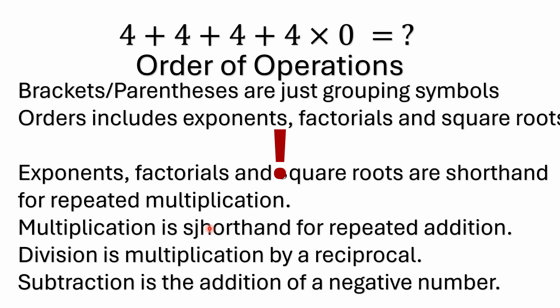Brackets or parentheses around multiplication or division are really redundant because multiplication already has precedence over addition and subtraction. Multiplication is shorthand for repeated addition. And the reason multiplication and division have equal precedence is because division is multiplication by a reciprocal — it's the same thing. For example, 10 divided by 5 equals 2, or 10 multiplied by one-fifth equals 2. It's the same thing.